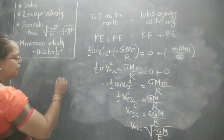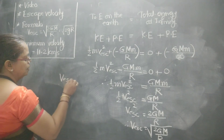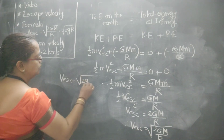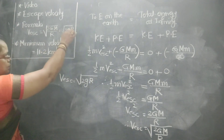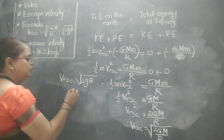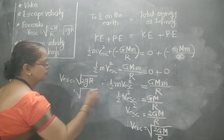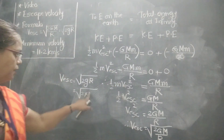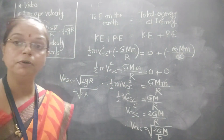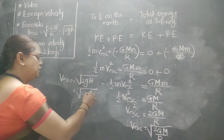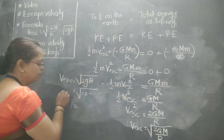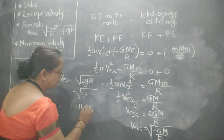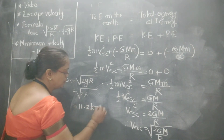Therefore v_s equals square root of 2gR. Substituting the values: 2 times g equals 9.8 m/s² and R equals 6.4 times 10 to the power 6 meters. Substituting all these values, we get v_s equals 11.2 kilometers per second.